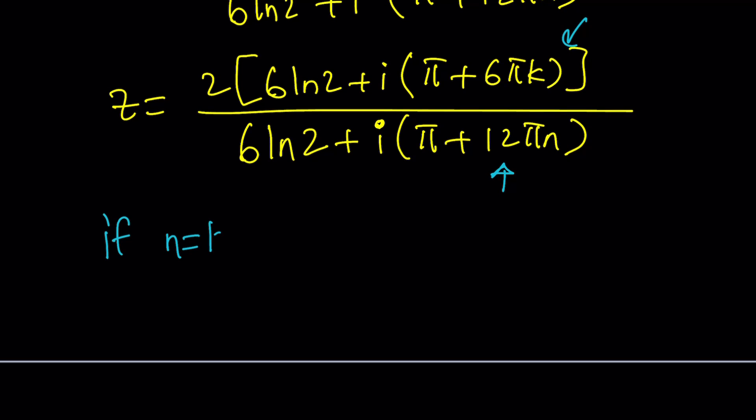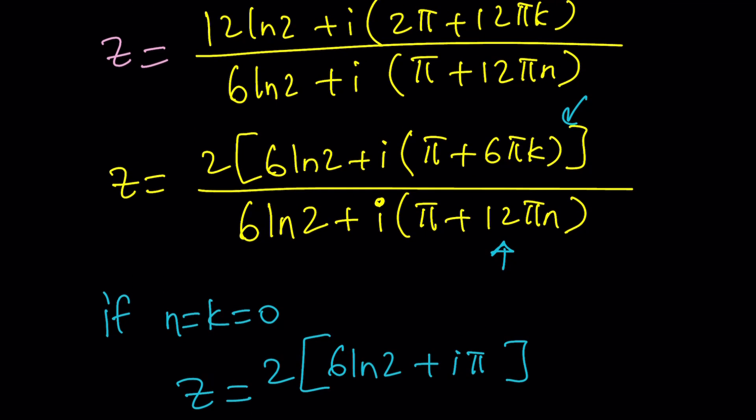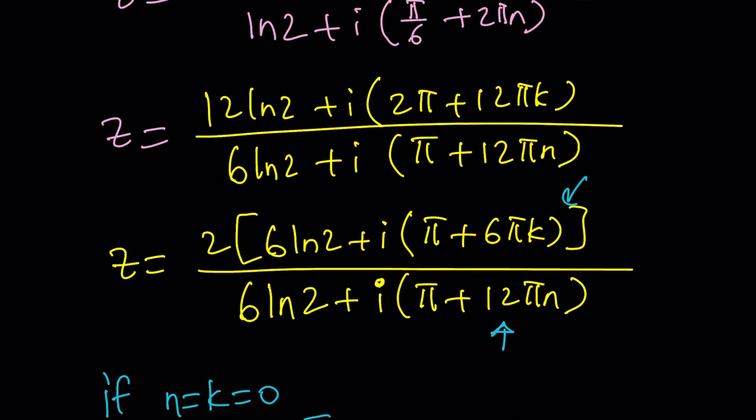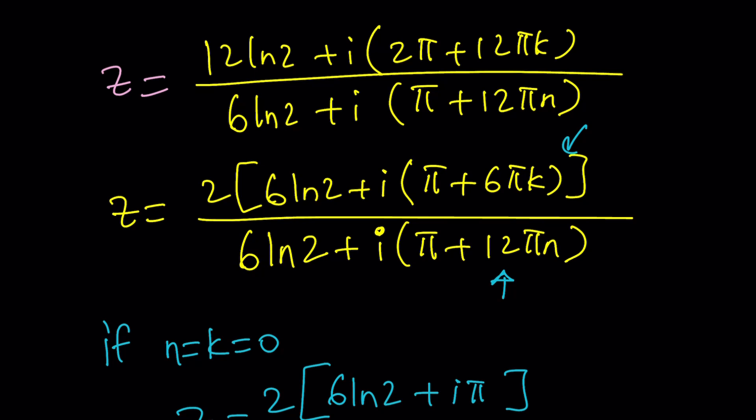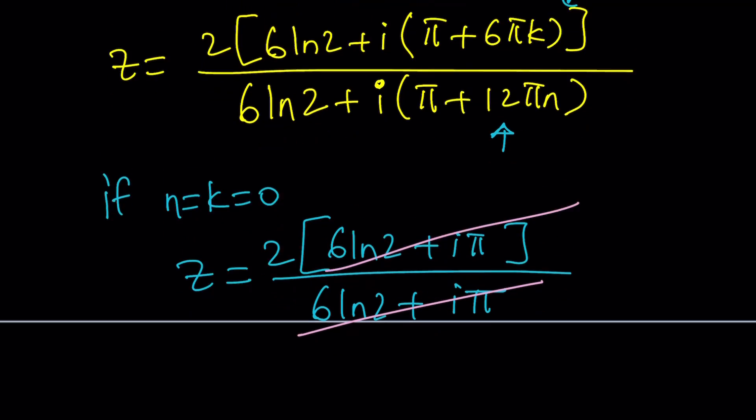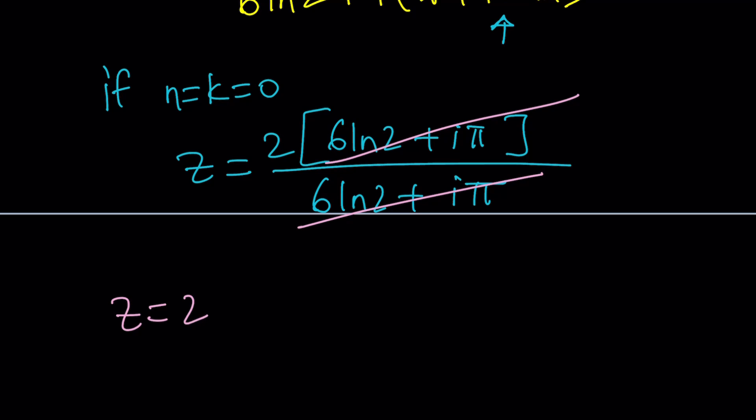But here's one thing we can do to simplify the process a little bit. And that's going to be an interesting case. If n and k are both 0, then we're going to get a simpler solution for you, don't you think? It's going to look like this. We're going to get 6 ln 2 plus i pi, and then when we multiply by 2, that's going to be that. And at the bottom, if n is 0, we're going to get 6 ln 2 plus i pi. Uh-oh. We have a common factor. We can go ahead and cancel that out. Surprise. Guys, z equals 2 works. That's actually the only integer solution.